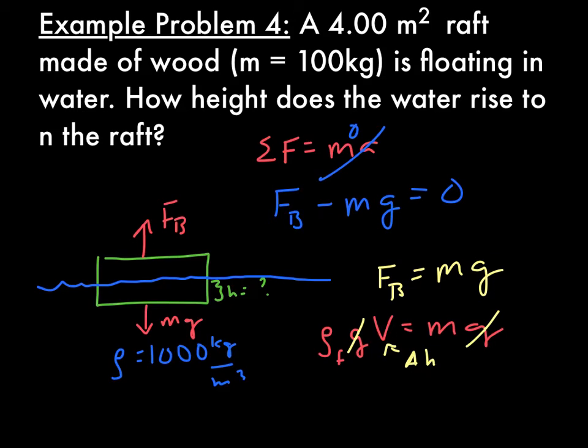And we're going to solve for height. So we get height equals m over rho of water, which is 1,000, 1,000 kilograms per meter cubed, times A. Solving this, plugging in some numbers, and you will get that this raft only displaces 2.5 centimeters of water, which is pretty remarkable.